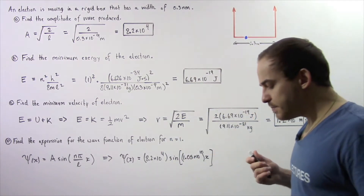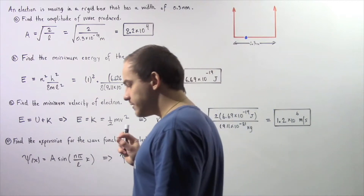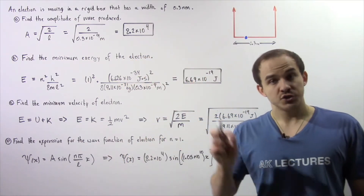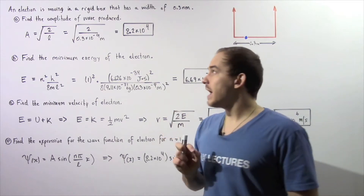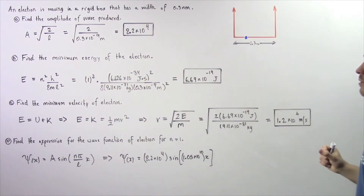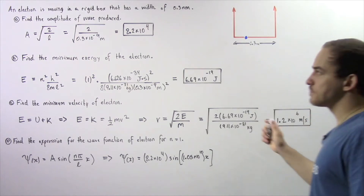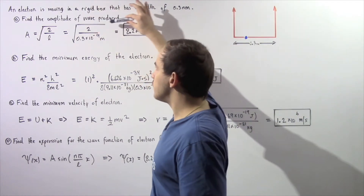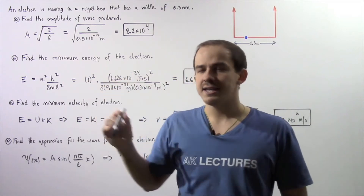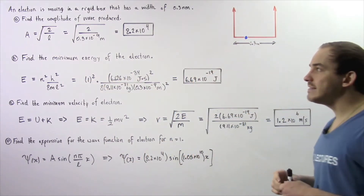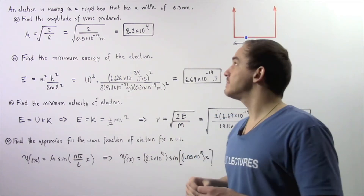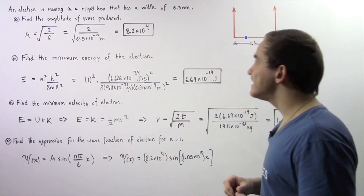Let's begin with part A. To find the amplitude we simply take the square root of 2 divided by L, where L represents the width of our box given in meters. So the square root of 2 divided by 0.3 times 10 to the negative 9 meters gives us a value of about 8.2 times 10 to the 4.